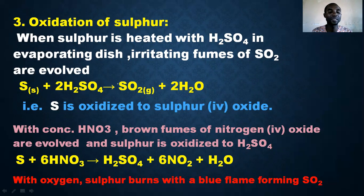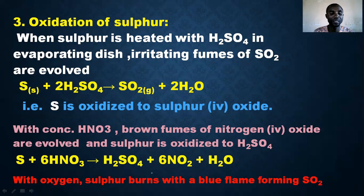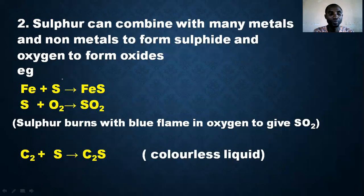With concentrated HNO₃, brown fumes of nitrogen dioxide are evolved and sulfur is oxidized to sulfuric acid — hydrogen tetraoxosulfate(VI), H₂SO₄. When sulfur reacts with HNO₃, it forms H₂SO₄. With oxygen, sulfur burns with a blue flame forming sulfur dioxide (SO₂).